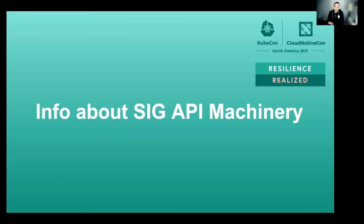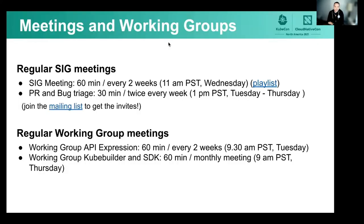Hello again. I hope you have enjoyed Joe and Abu's talks as much as I did. I truly always learn a lot when I listen to my colleagues — it's one of the things I like most about this community and this SIG. Thank you both Joe and Abu for presenting today. Now to close, let's get some quick info about the SIG. We meet every two weeks on Wednesdays. The agenda is public and the topics are usually very interesting. On top of that, we meet twice a week for regular bug and PR triages. There is no need to be an expert to join either of the meetings — everybody is welcome. The triage meetings are a great concrete way to get familiar with what's going on day-by-day in the SIG.